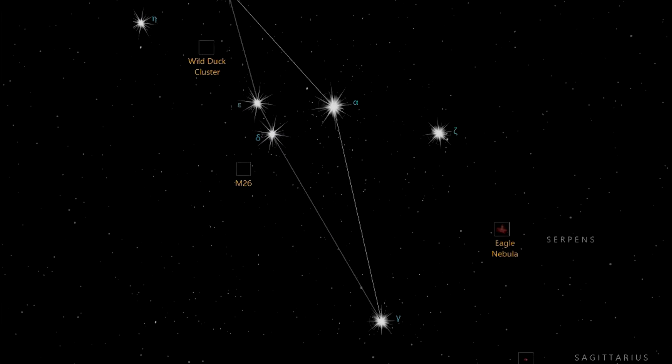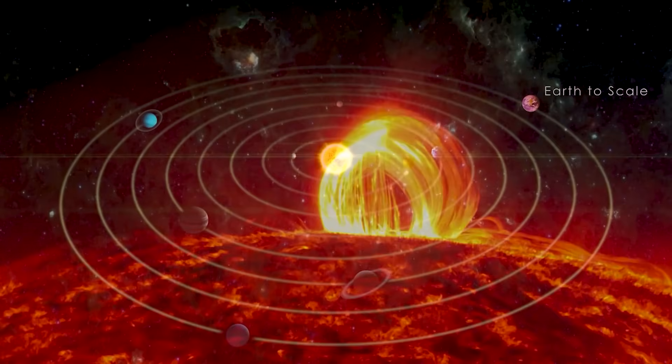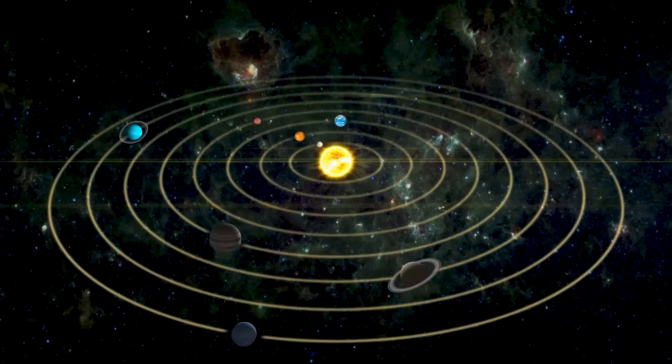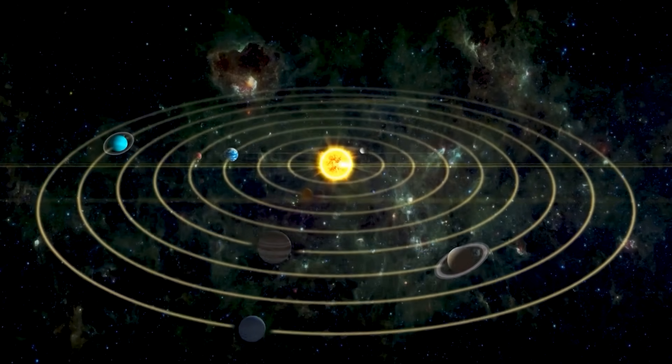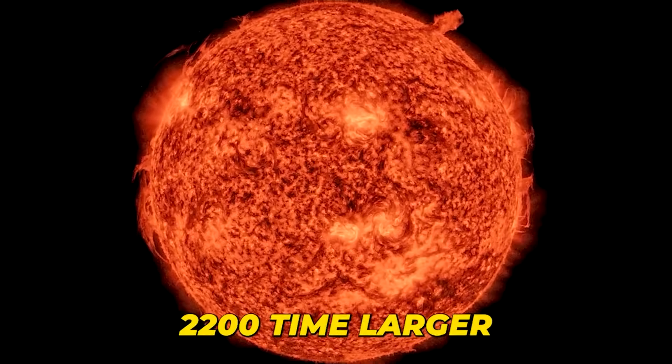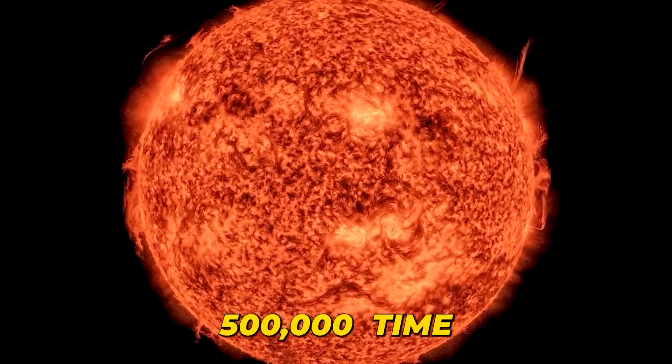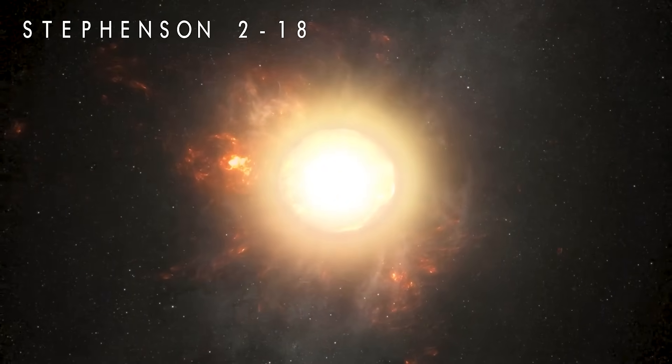The hypergiant star Stevenson 218 is located in the Scutum constellation, and it astounds us with its immense size and brightness. If we were to place this star at the center of our solar system, it would engulf almost half of it. With a radius approximately 2,200 times larger than that of our sun, and a luminosity surpassing the sun by about 500,000 times, Stevenson 218 is truly remarkable.